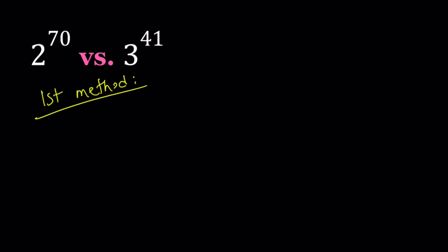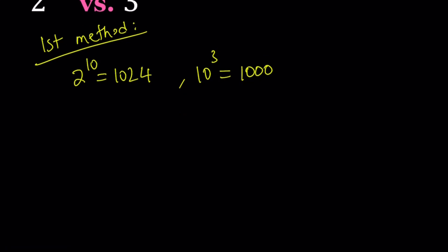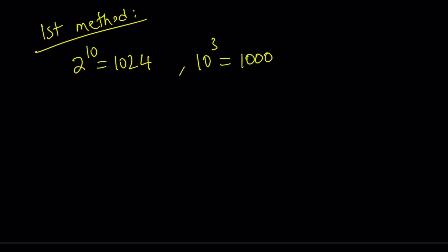For my first method, I'm going to consider two powers first. I have 2 to the 10th power, which is 1024, and 10 to the power 3, which is 1000. Those numbers are pretty close. Now why do I use a 10? I'll tell you in a little bit. We know that 2 to the 10th power is greater than 10 to the power 3.